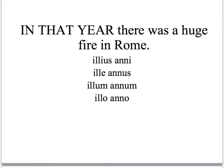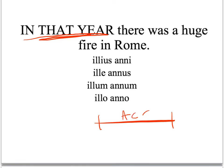'In that year, there was a huge fire in Rome.' Look — they've even got the word 'when' highlighted in capitals. That means, thinking about our diagram, accusative covers duration and ablative covers a point in time, so it must be the ablative here: illo anno.